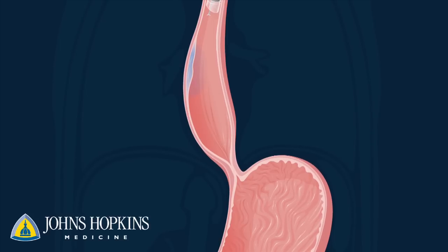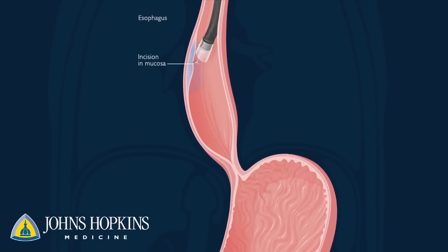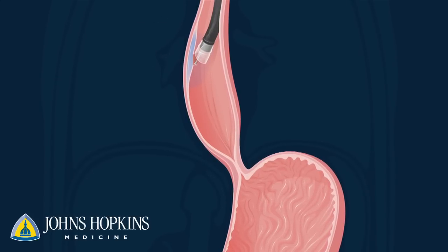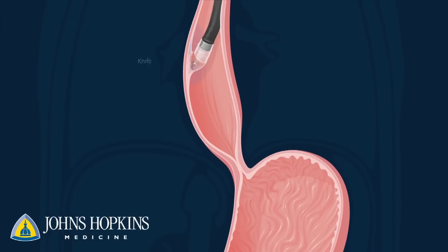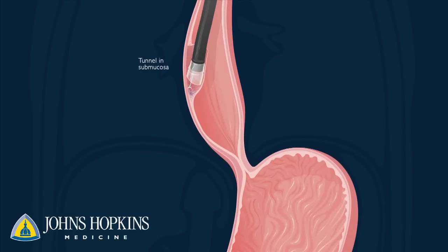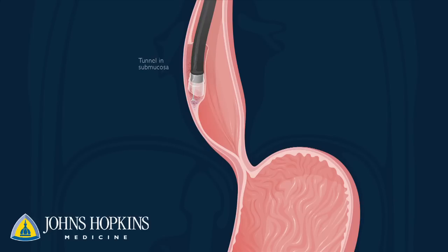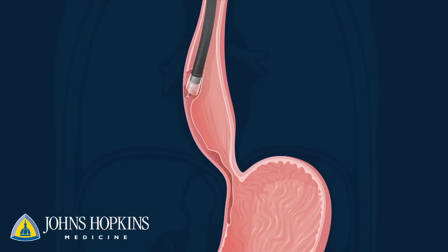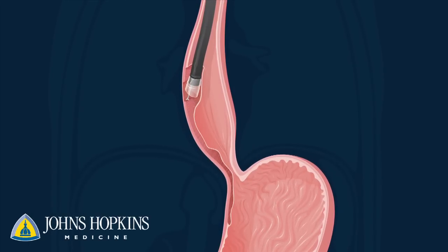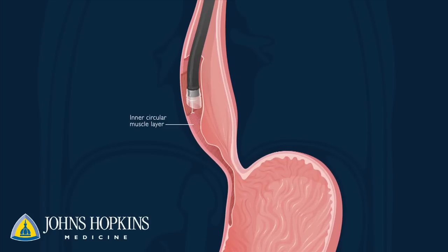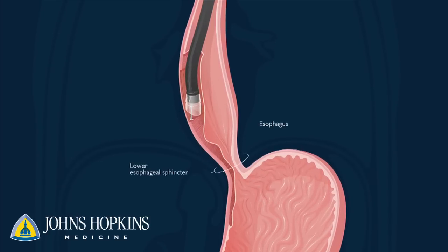During the procedure, the endoscope is entered into the esophagus where an incision is made in the lining, or mucosa, of the esophagus. The doctor uses a special knife on the tip of the endoscope to tunnel through the wall, or submucosa, of the esophagus. This allows the doctor to access the muscle layers below. Next, the myotomy is performed — the doctor uses a knife to cut and partially remove the inner circular muscle layer from the last part of the esophagus, the lower esophageal sphincter, and the upper part of the stomach.